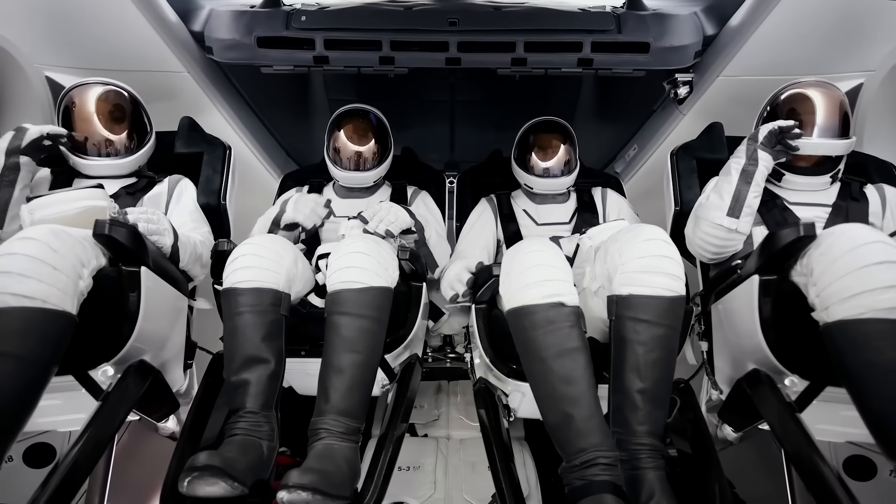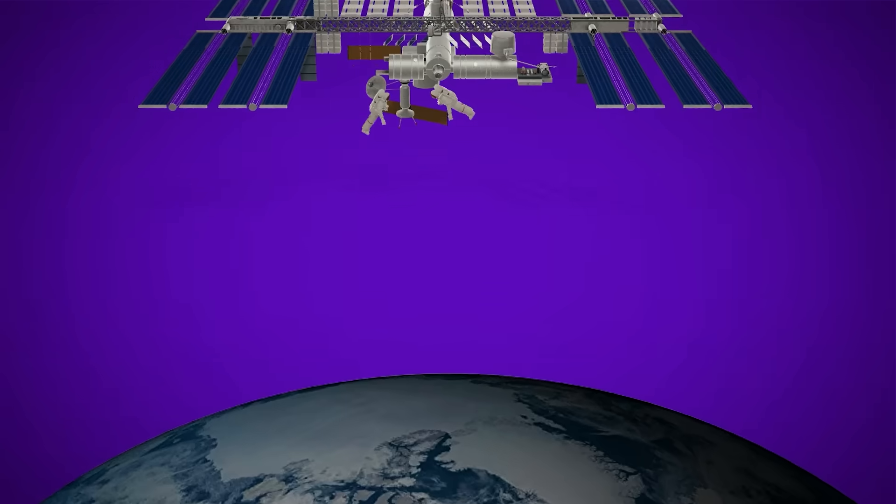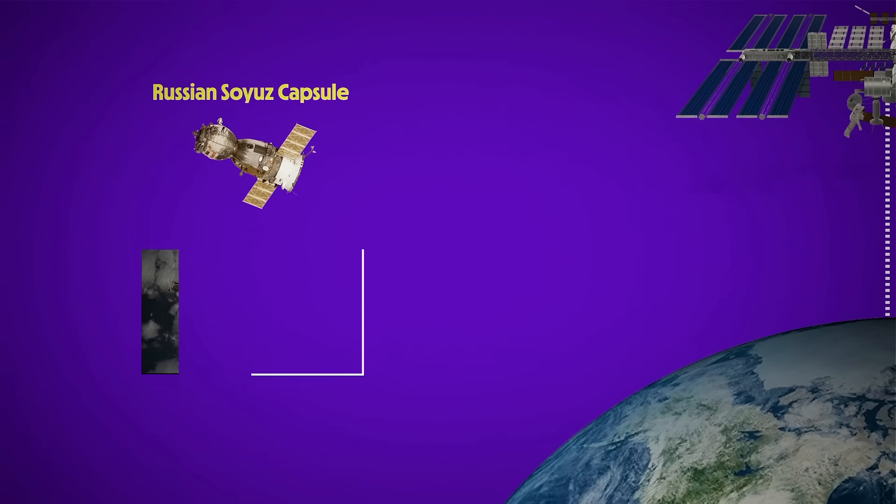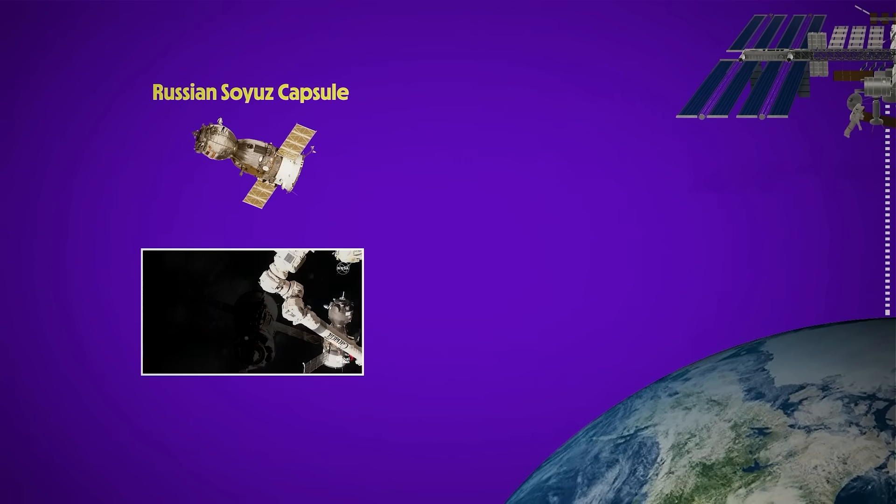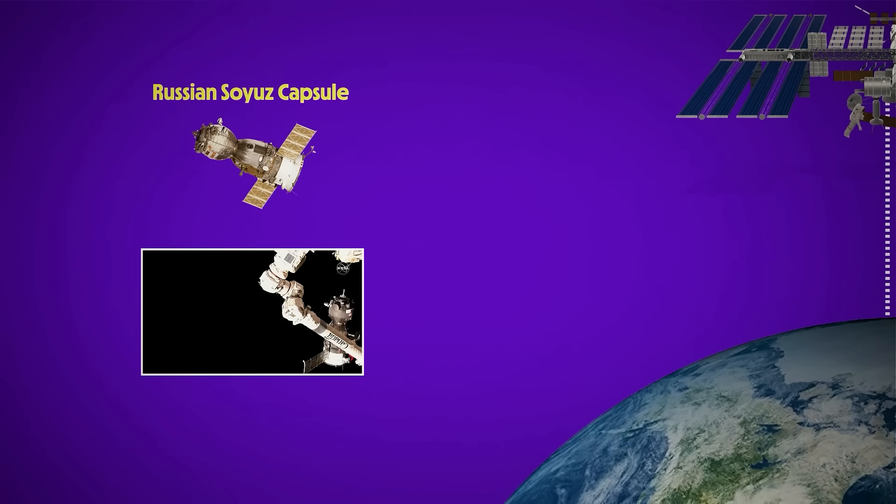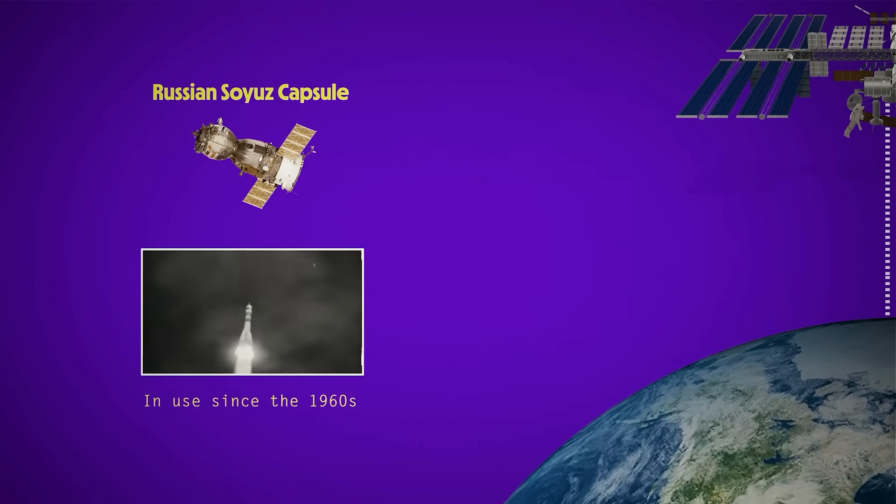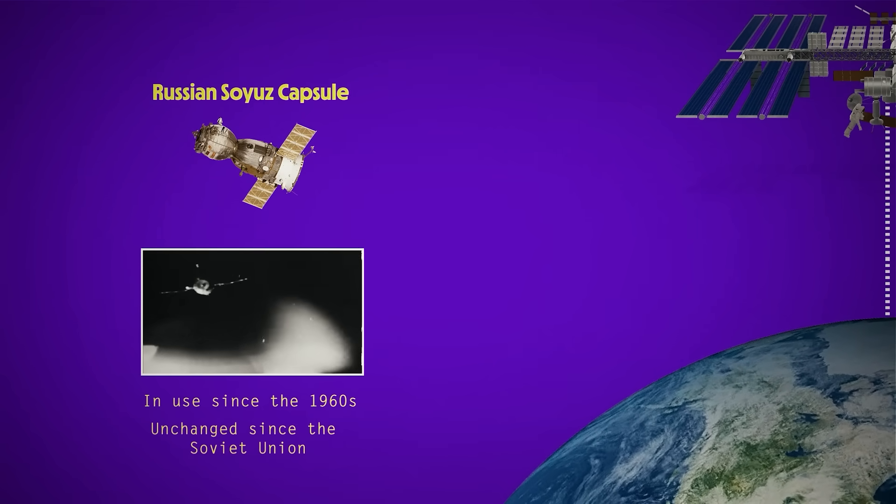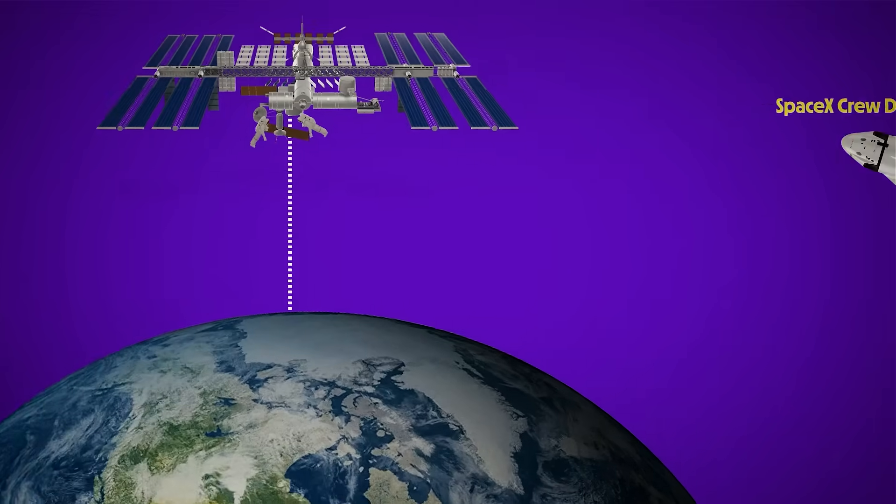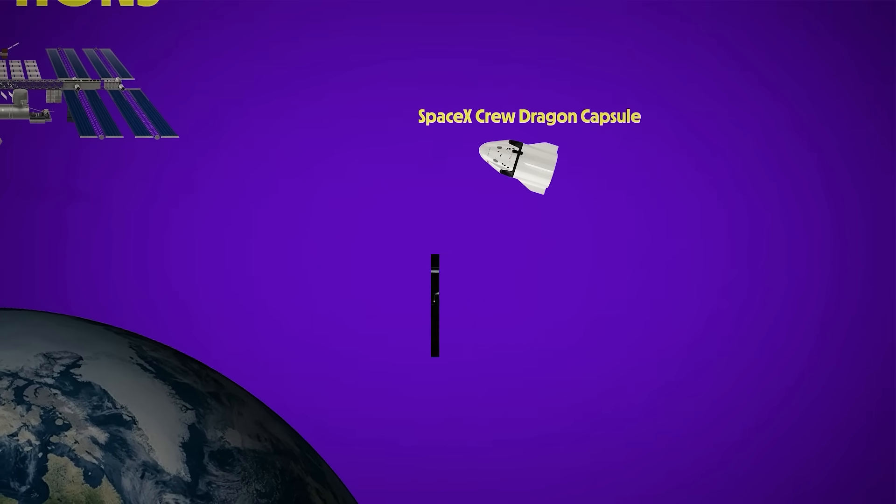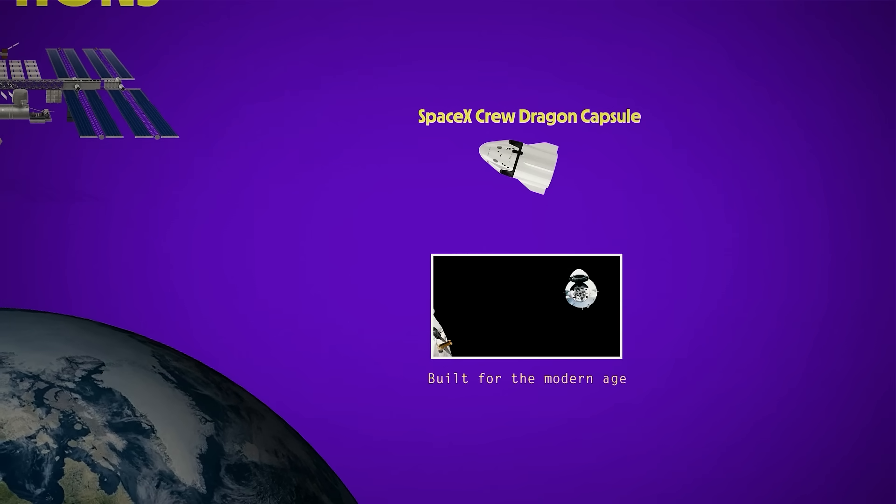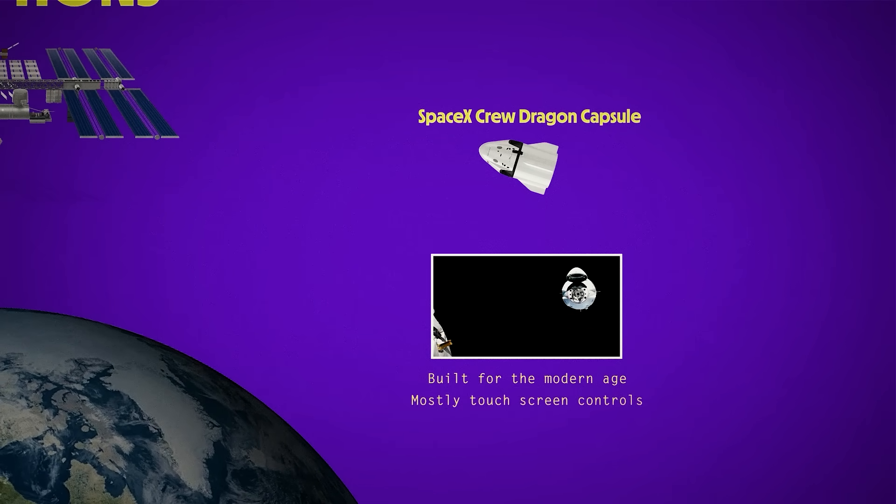Alright, the first thing we need to do is get ourselves strapped into a spacecraft and prepare to blast off. To reach the ISS, you've got two options. Option one, the Russian Soyuz, a compact capsule that's been flying crews to the station since the very beginning. It's a design that's been in use since the late 1960s, and has gone mostly unchanged since the era of the Soviet Union. Option two, the SpaceX Crew Dragon, which has a sleek design on the outside, a spacious and comfortable layout on the inside, and is built for the modern era with mostly touch screen controls.